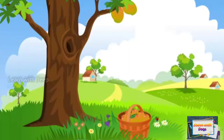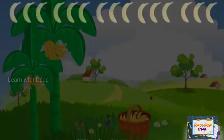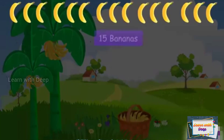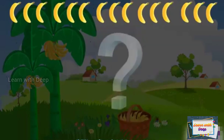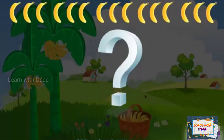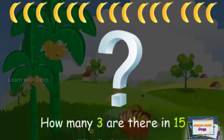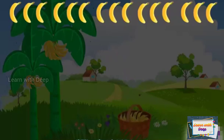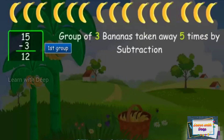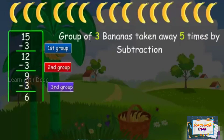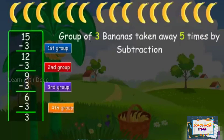Let's see one more example. These are 15 bananas. Let's see how many 3 are there in 15. A group of 3 bananas is taken away 5 times by subtraction.